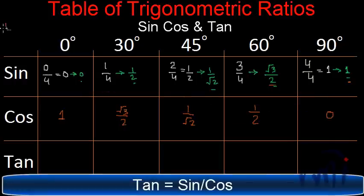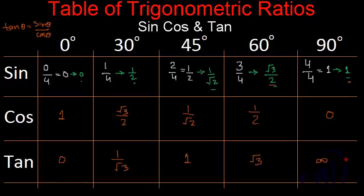We know that tan theta is equal to sine theta by cos theta. So tan 0 will be 0. Tan 30 will be 1 by root 3. And so on. So keep watching MathSmart. And bye-bye till then.